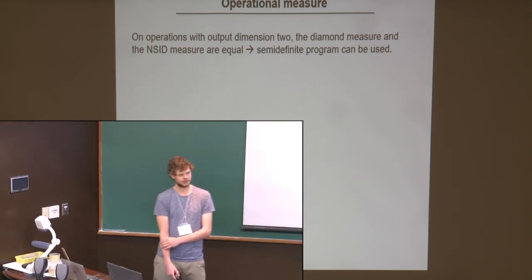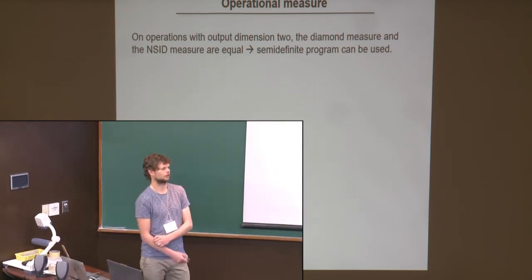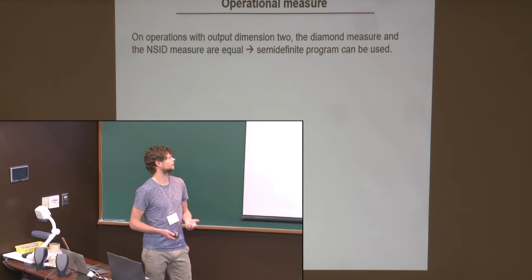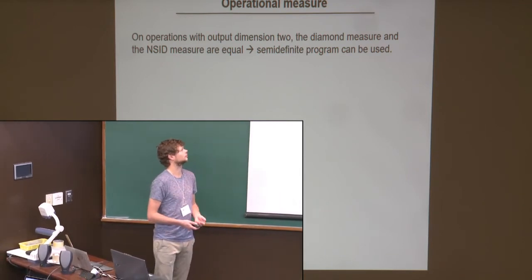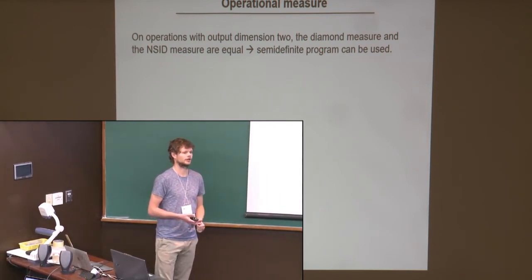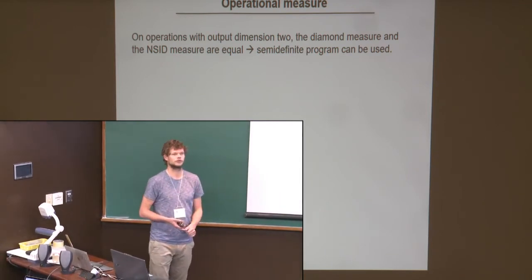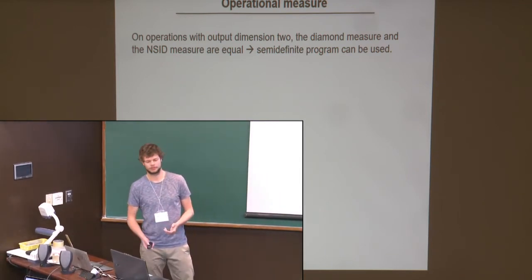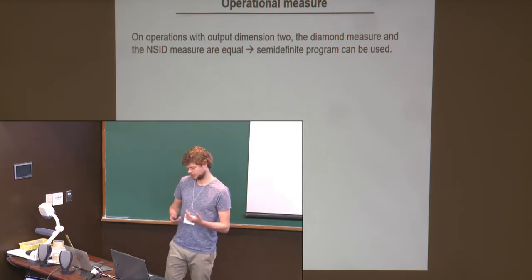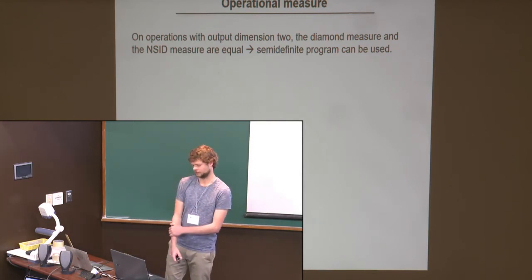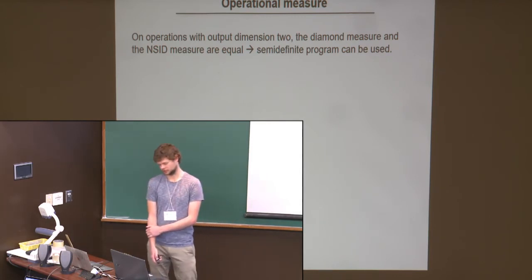If the output of the operation has dimension two, the two measures — the diamond-norm-based measure and the ANSET measure — coincide. Otherwise they don't in general. In this special case we have the nice feature that we can evaluate it using the semi-definite program and that we have an operational interpretation.